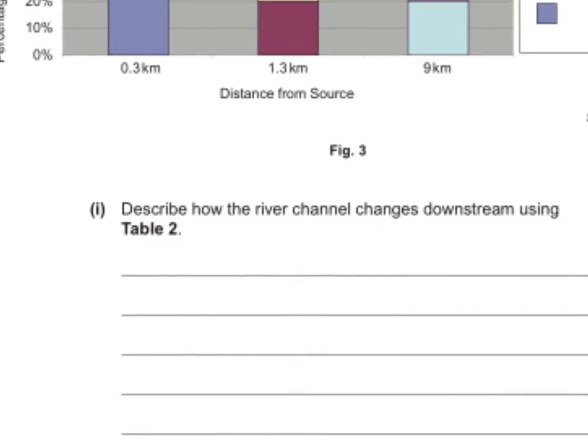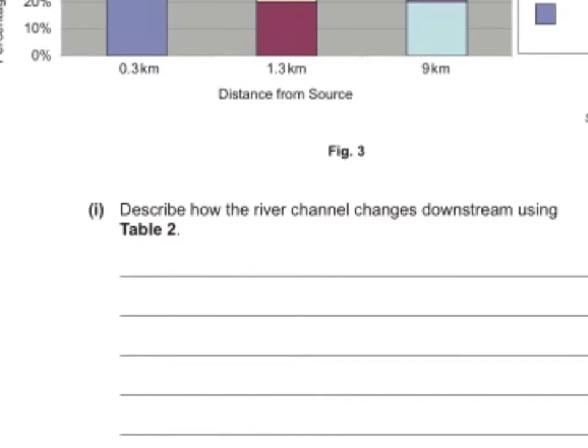First question says, describe how the river channel changes downstream using table two. If you want, you can pause the video at this stage, have a go at writing your own answer, and then check your answers.